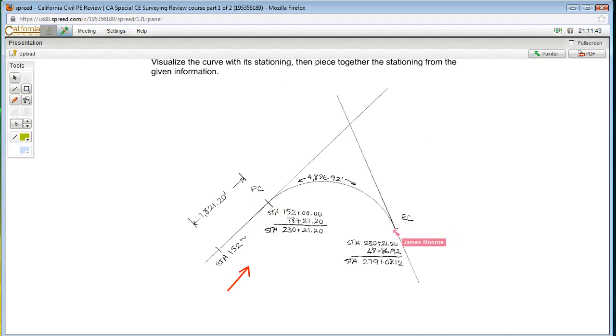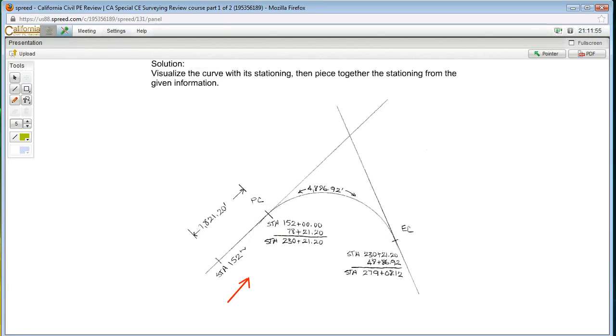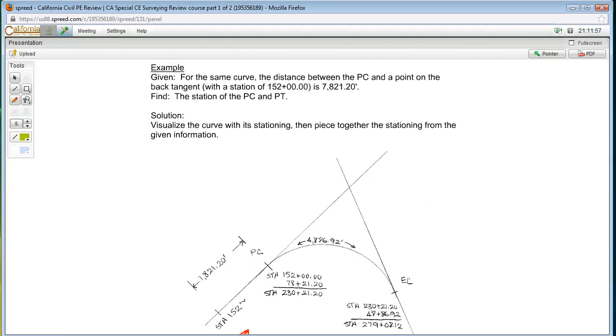Which means I'm going to put my point of curvature here, my point of tangency or end curve right here. I'm also going to note that the problem statement says distance between the PC right here and a point on the back tangent. Now, the back tangent is this piece here because it is back station. So it says I can go back there to a station of 152 even and that that distance along that back tangent is 7821. That's what they're saying right here.